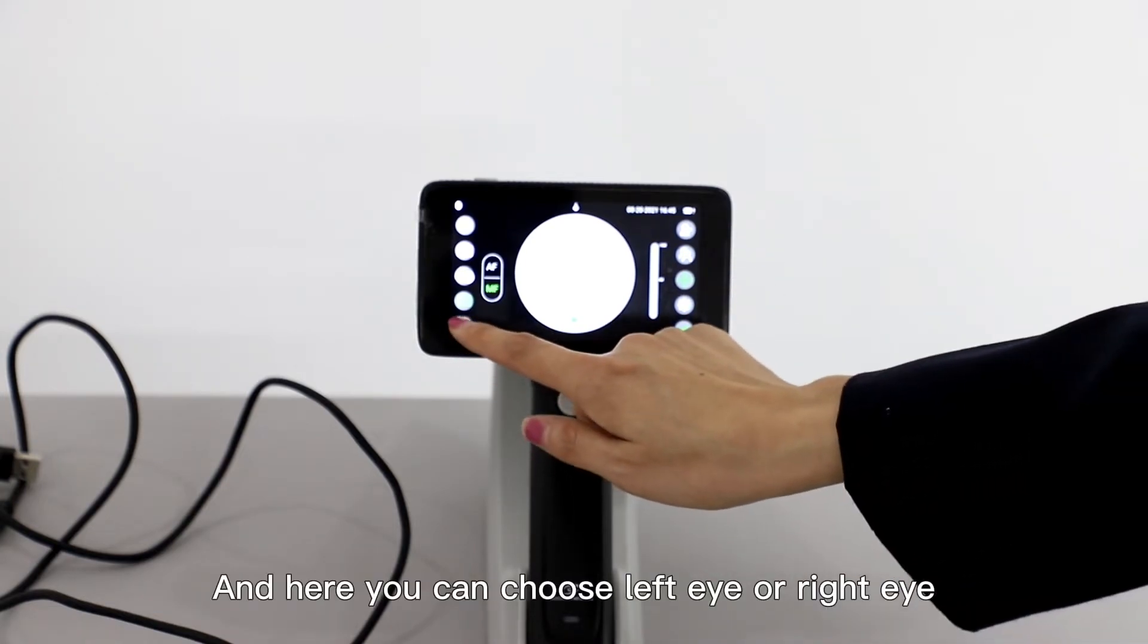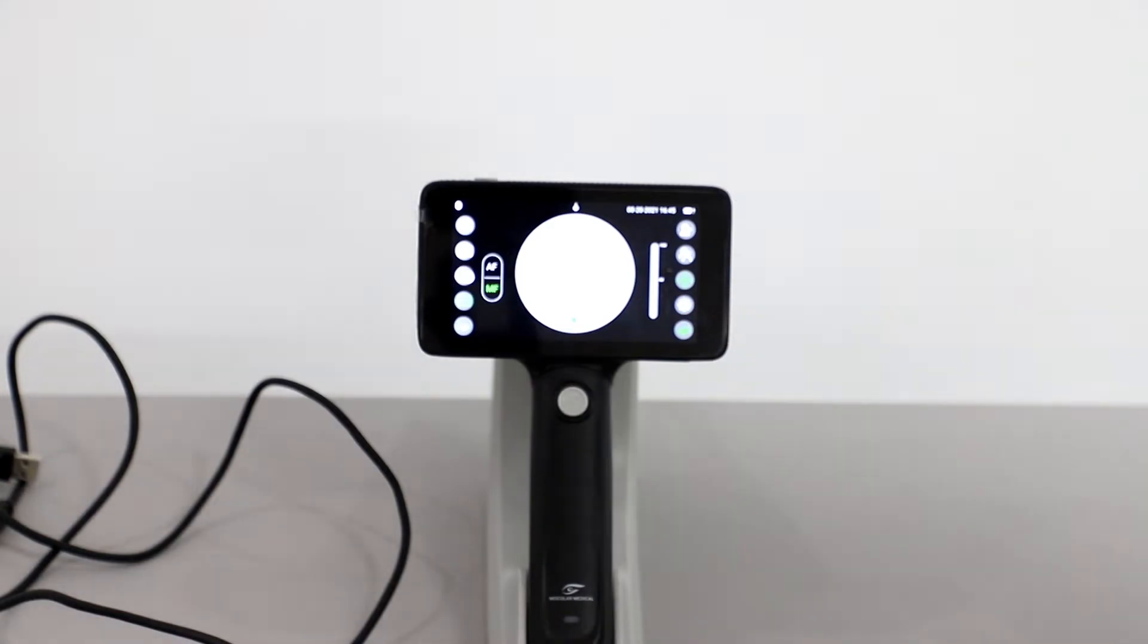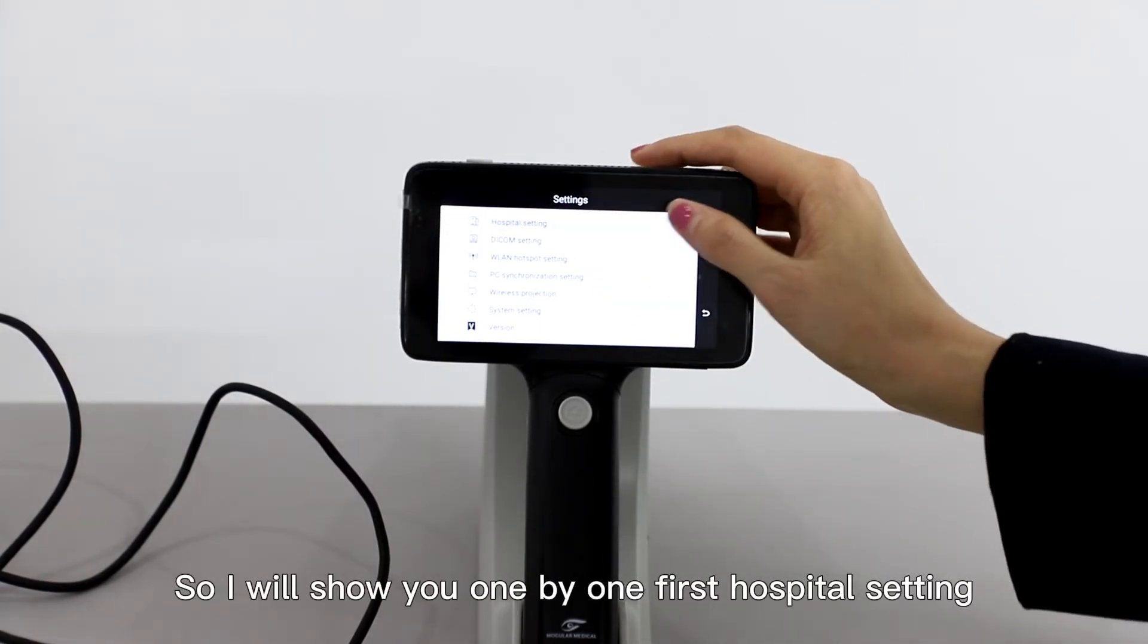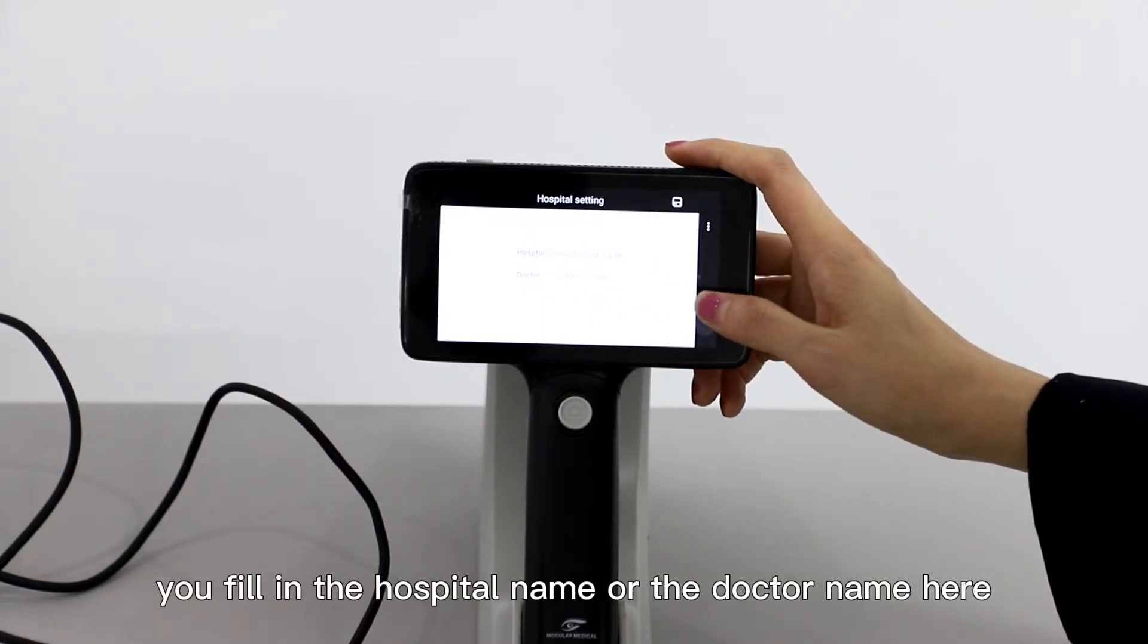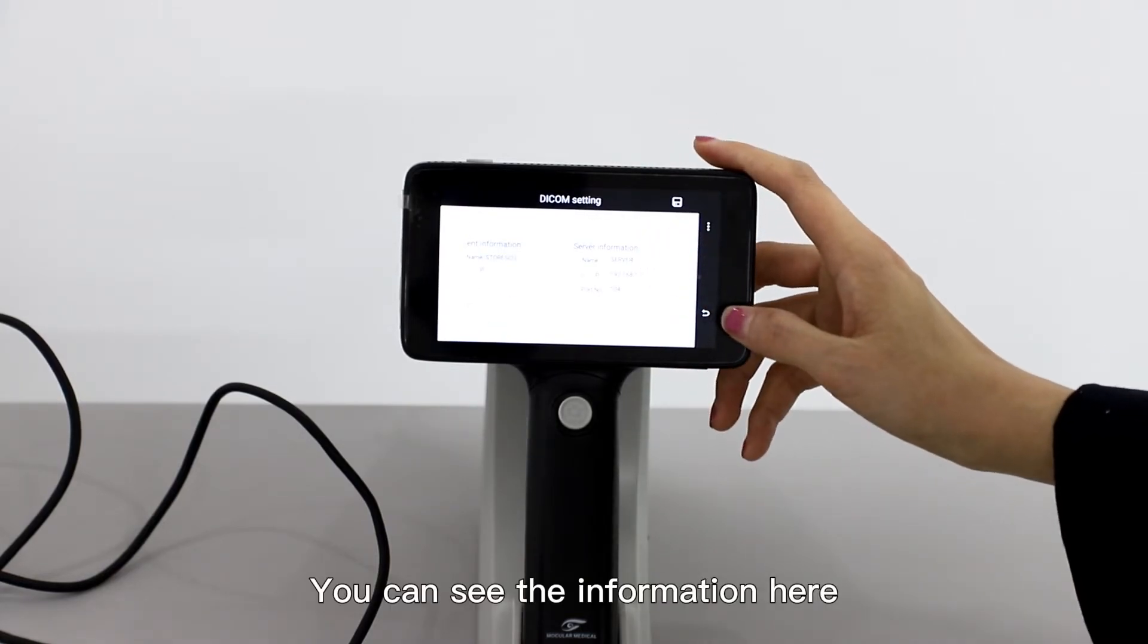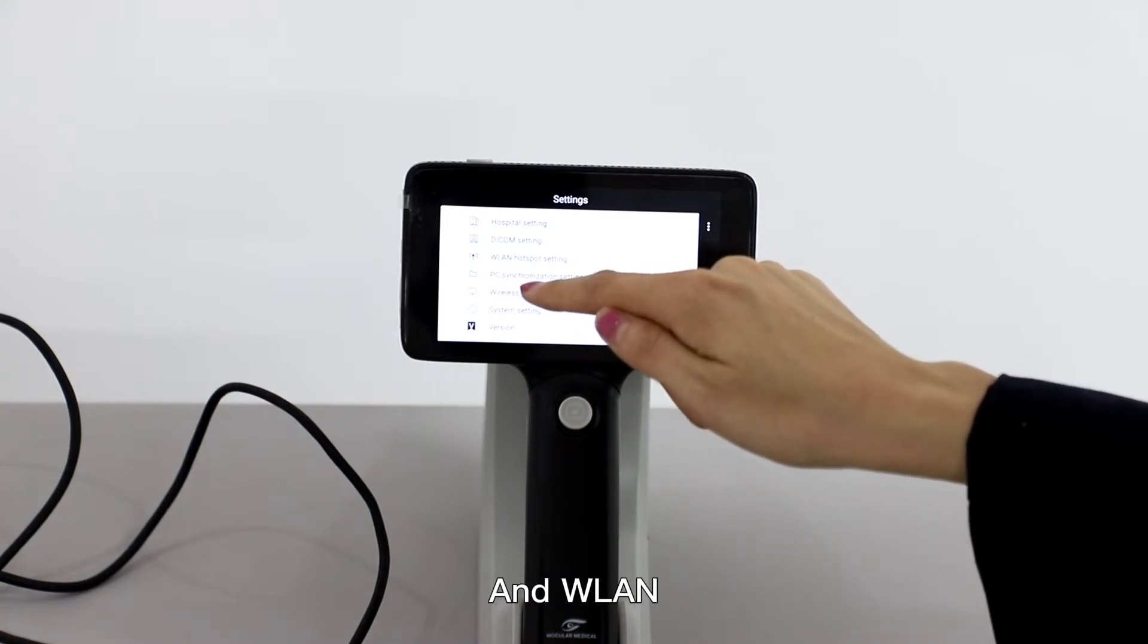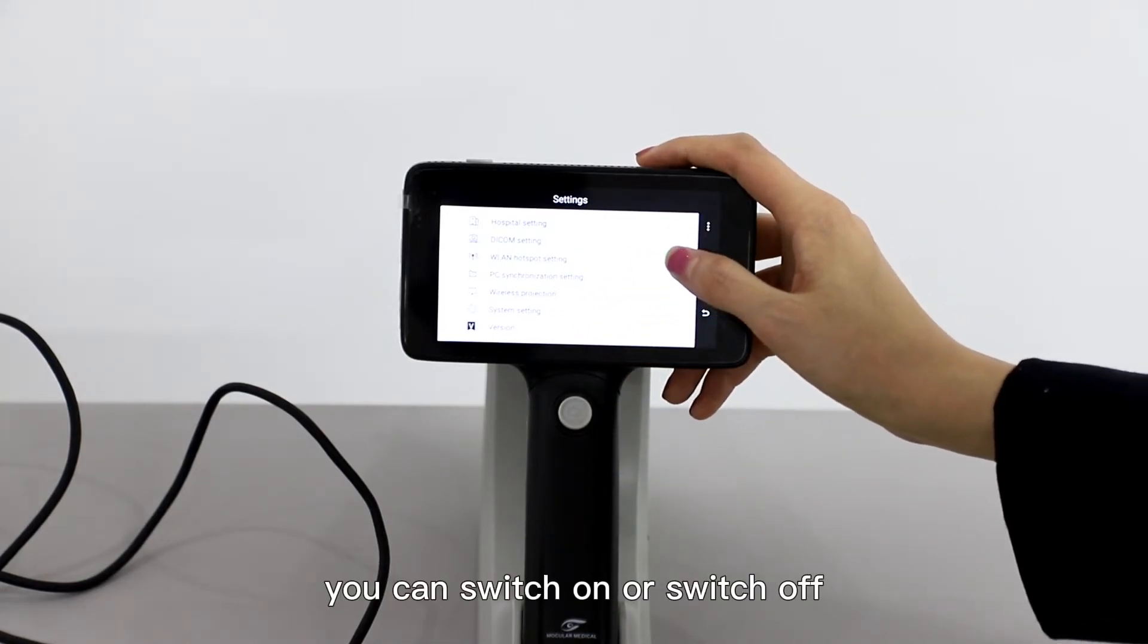Let me show you the settings one by one. First, the hospital setting where you fill in the hospital name or the doctor name. The DICOM setting shows the information here. For WLAN, the hotspot setting, you can switch on or switch off.